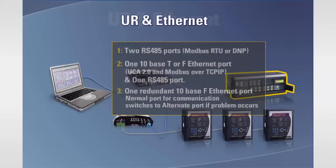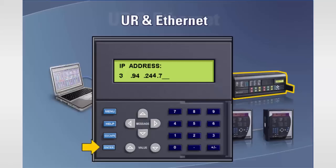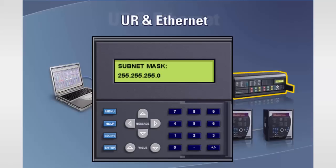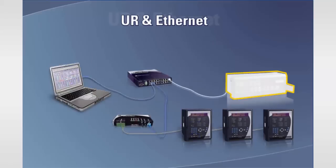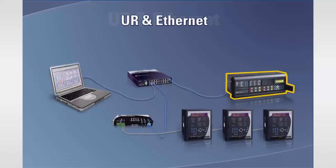Now we'll configure the UR. Using the keypad, enter a unique IP address and subnet mask. If using our test network addresses, the unique IP address will be in the range of 3.94.244.001 through 3.94.244.254 and the subnet mask will be 255.255.255.0. Set the Modbus address and configure the Ethernet port for full duplex. Connect the UR to the switch via a 10BASE-T cable and ensure that all appropriate sync lights are lit.